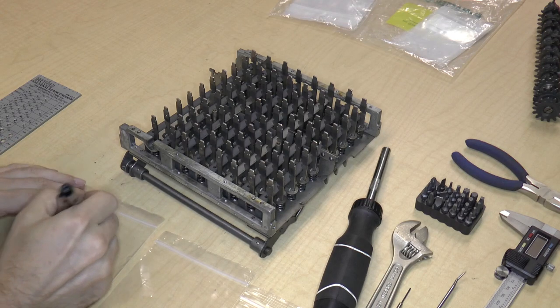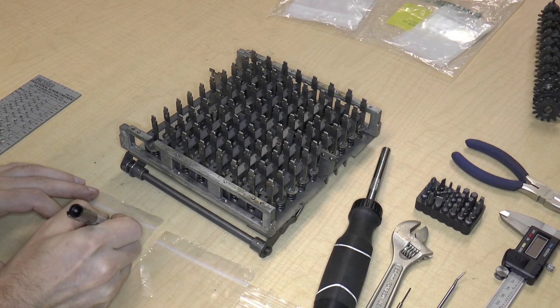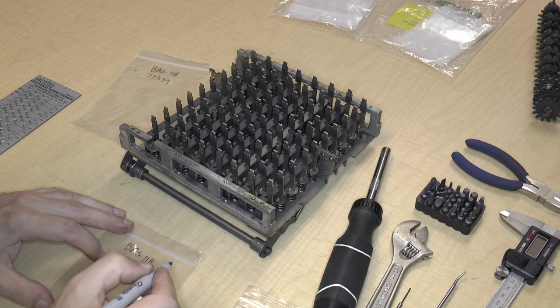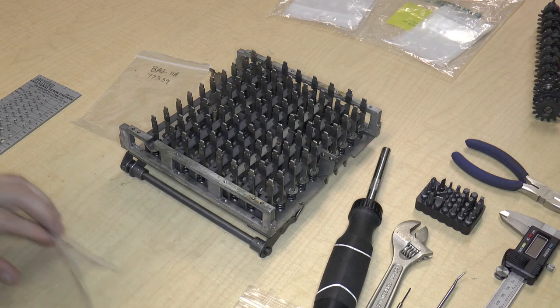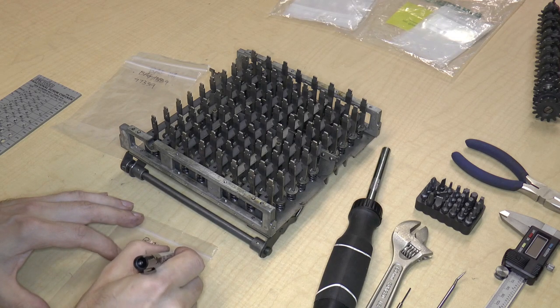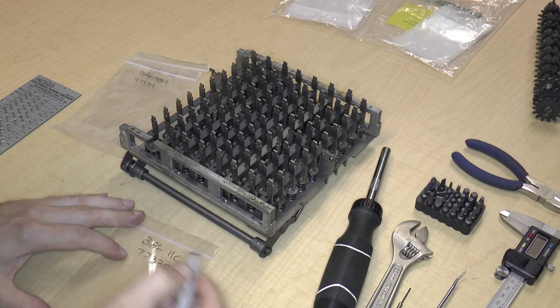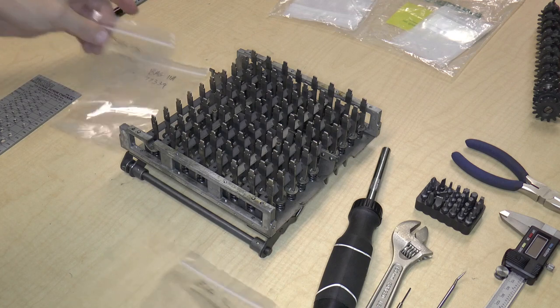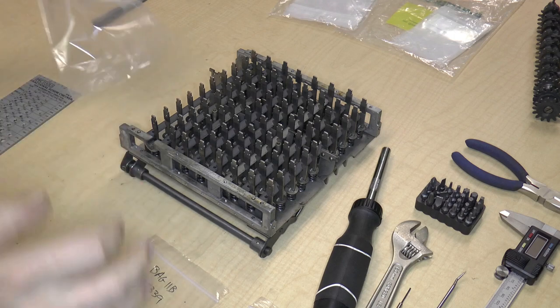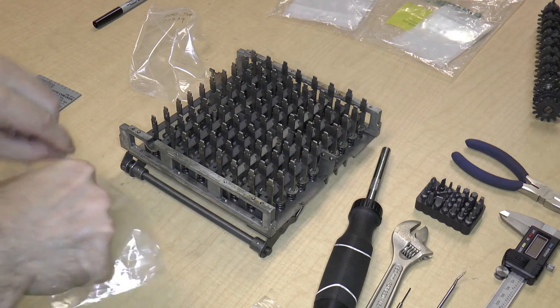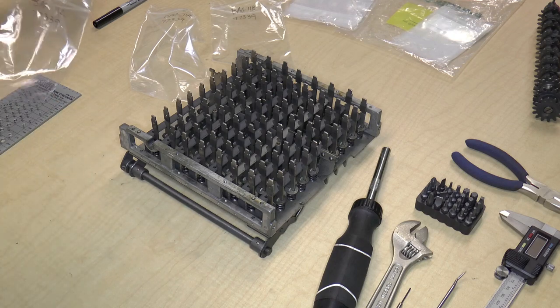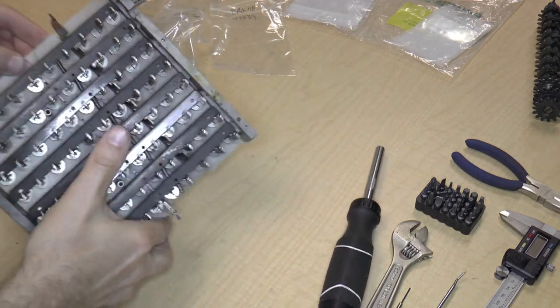Bag 11a of 77339. Bag 11b, 77339. So, 11a is going to contain all the key stems, 11b is going to contain all the small parts, and 11c is going to contain all the springs.